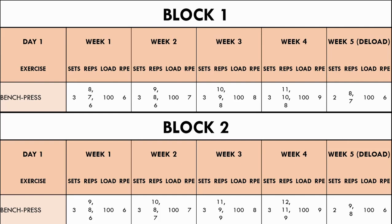The second option is to keep the sets and RPE the same but increase the load slightly. This will have the trainee perform their sets in a slightly lower rep range, although they can then increase the number of reps being performed over time with this new heavier load. For example, if the trainee uses a load of 100kg for the first block for the bench press, they may use 105kg for the second block with the same RPE scheme. Eventually, if load is increased every block, the number of reps performed will reduce so low that hypertrophy is not being optimised. It is recommended that if reps drop below 6 on average for compound lifts or 8 on average for isolation exercises, then loads shouldn't be increased any further.